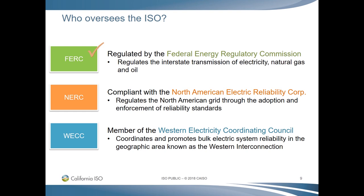The North American Electric Reliability Corporation, or NERC, is the international regulatory authority whose mission is to assure the reliability and security of the bulk power system in North America. NERC's major responsibilities include working with all stakeholders to develop standards for power system operation, monitoring and enforcing compliance with those standards, and providing training resources as part of an accreditation program. The Western Electricity Coordinating Council, or WECC, is a non-profit corporation responsible for coordinating and promoting bulk electric system reliability in the Western Interconnection.